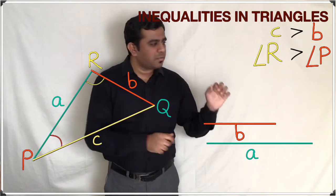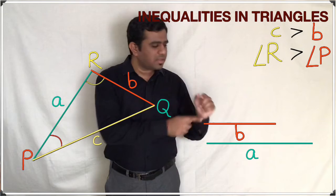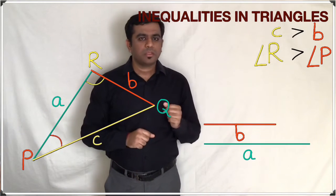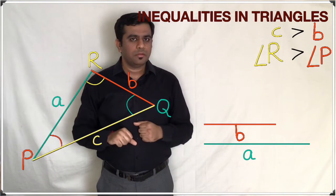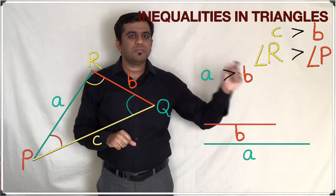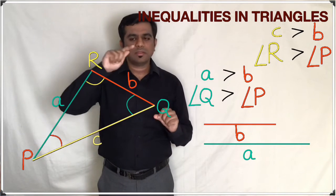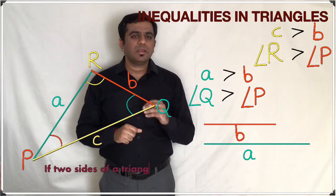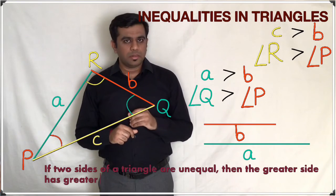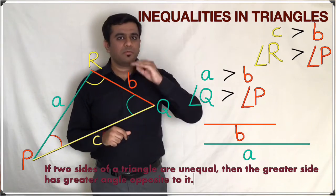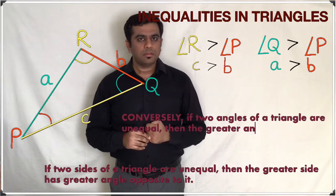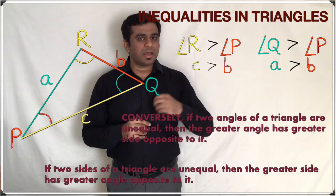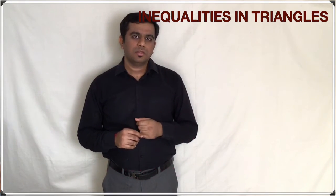Instead of side c, if we take side a and compare it with b, we see that a is greater than b. Side a has angle Q opposite to it, so if a is greater than b then angle Q is greater than angle P. This means in a triangle, if two sides are unequal, the greater side will have the greater angle opposite to it. Conversely, if two angles of a triangle are unequal, the side opposite to the larger angle will be larger.